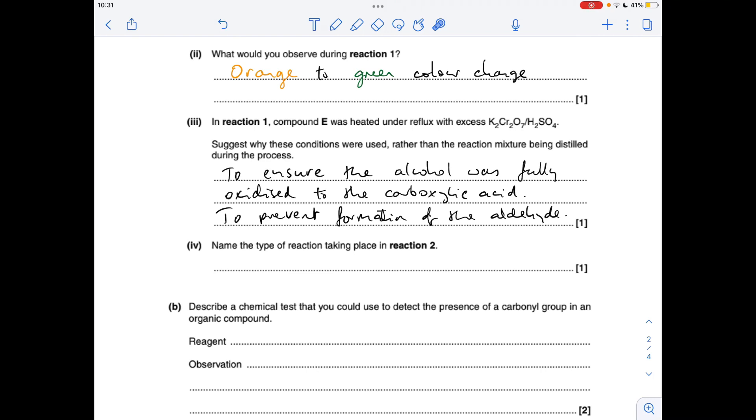Remember, when a primary alcohol is oxidized it initially goes to an aldehyde, and if you have distillation as your method you would form the aldehyde.